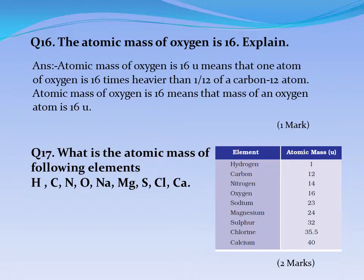Question No. 17: What is the atomic mass of the following elements — Hydrogen, Carbon, Nitrogen, Oxygen, Sodium, Magnesium, Sulphur, Chlorine, and Calcium? Answer: Hydrogen 1U, Carbon 12U, Nitrogen 14U, Oxygen 16U, Sodium 23U, Magnesium 24U, Sulphur 32U, Chlorine 35.5U, Calcium 40U.